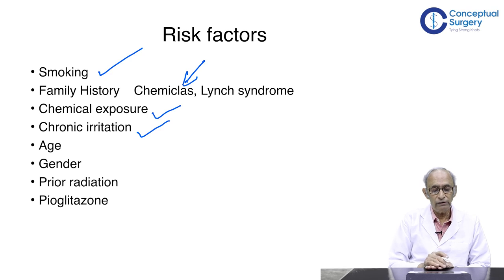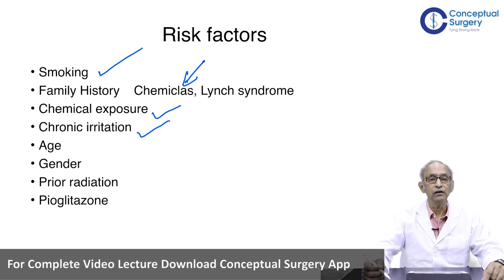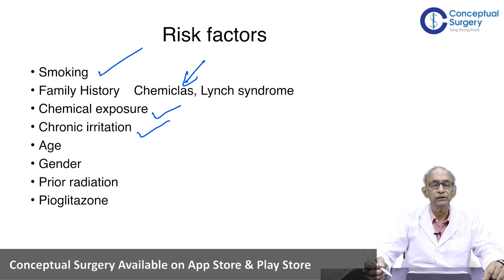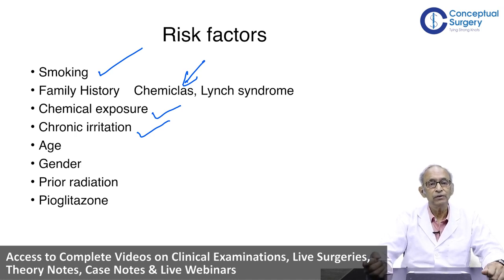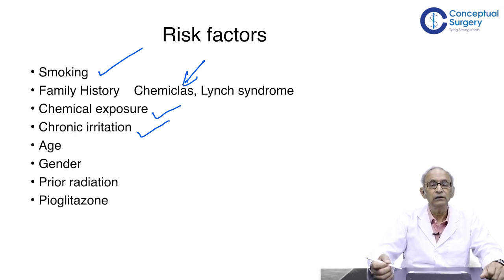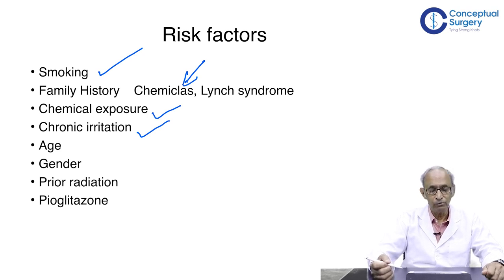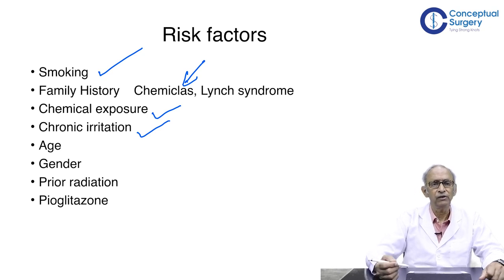Chronic irritation is another important risk factor. Long-term catheterization is not uncommon — in a urological OPD you will find patients who have catheters in place for months or even years. Long-term catheterization or a stone in the bladder causes constant irritation; catheters also form phosphatic encrustations which add further irritation. Chronic cystitis can also make one prone to malignancy.